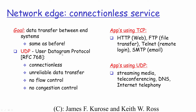Applications that use TCP include HTTP, HTTPS, FTP, Telnet, SSH, and SMTP — applications that require reliable delivery over the network. Applications that use UDP include streaming media, DNS, network management (SNMP), and voice-related applications. These applications make use of UDP as their underlying transport protocol.